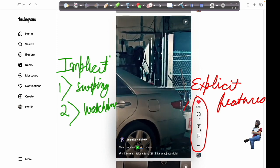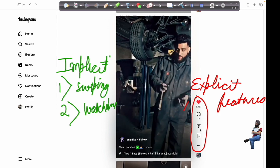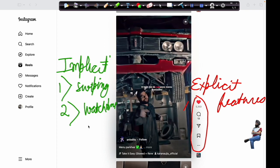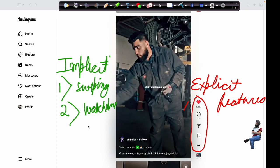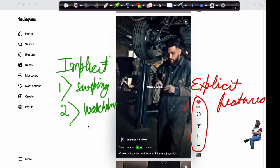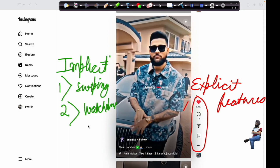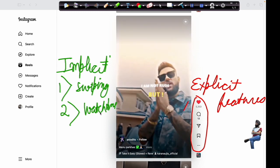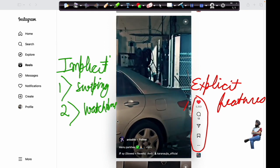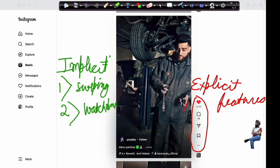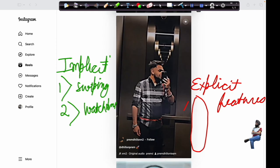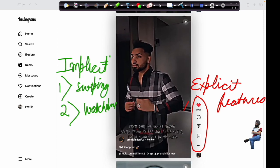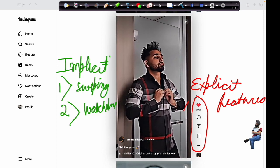These explicit features encode explicit user interactions. The second features are implicit features. Implicit features are derived from implicit user behavior and interactions. Whenever you're liking a particular video you're going to watch it multiple times. So watch time is an implicit feature. If you're disliking it or not enjoying it, you can swipe it up immediately in a matter of seconds. These are the implicit and explicit user features.